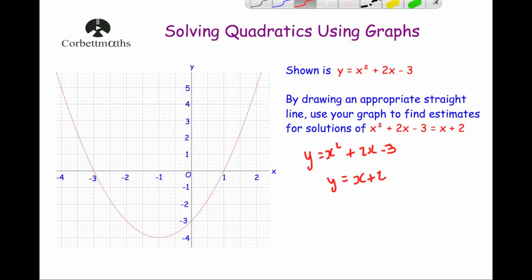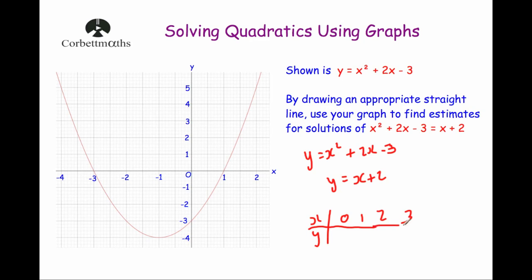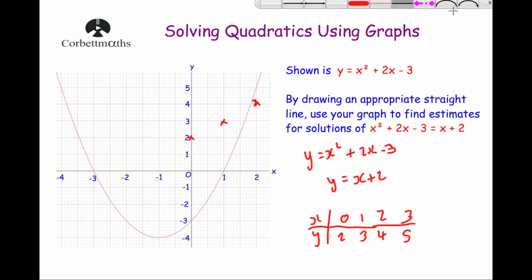Let's first do an x-y table. For x values 0, 1, 2, 3, to find our y values we just add 2 to the x value. So adding 2 gives us 2, 3, 4, and 5. Plotting those points: (0,2), (1,3), (2,4). My next point at x equals 3 is not on the graph, but we've got 3 points anyway.